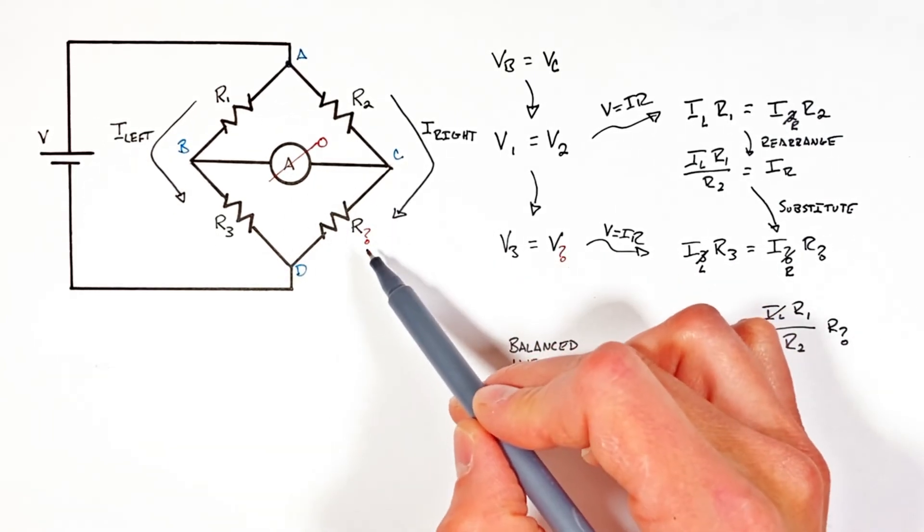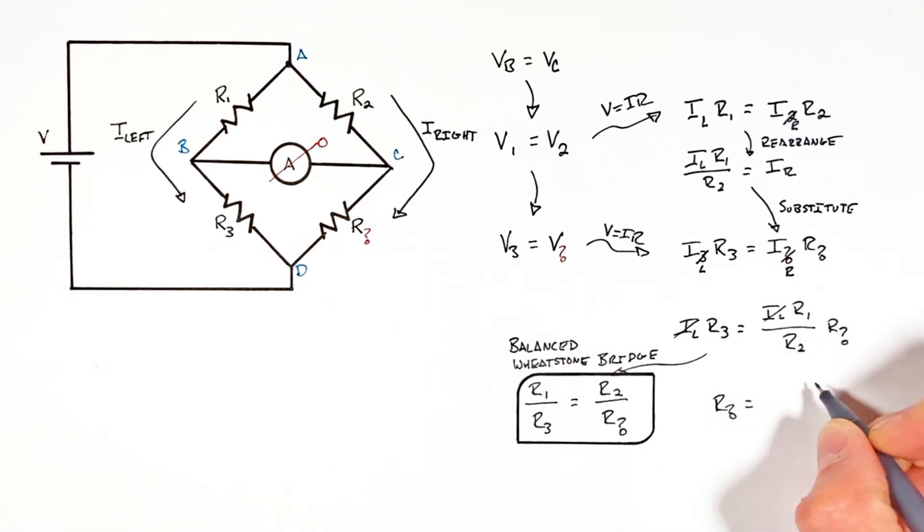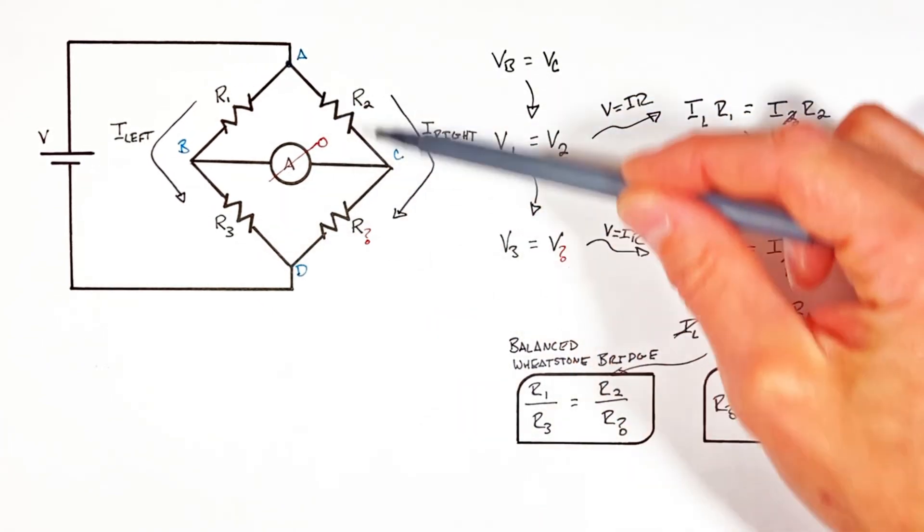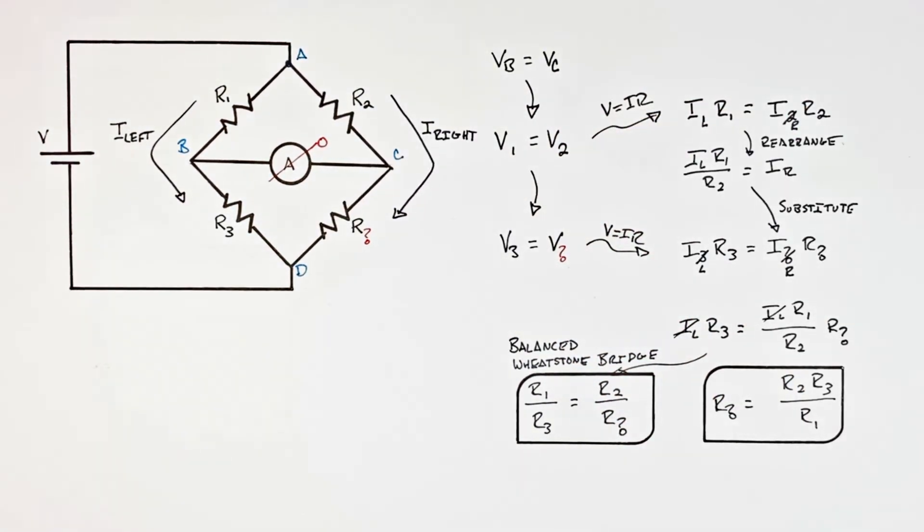The other way to rearrange this equation is to actually rearrange it for what we were originally looking for, and that is our unknown resistor. And this will allow us to solve for the required value of resistance in this one resistor such that the entire system or bridge is balanced.